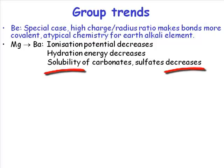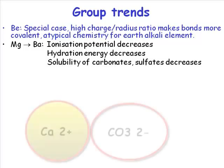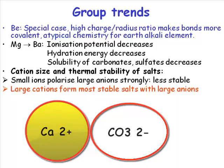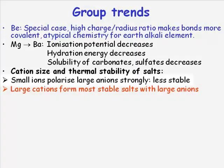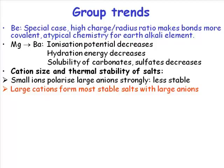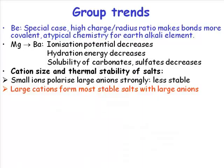Because hydration energy is decreasing — the energy you get back when you dissolve something is decreasing — you find that the solubility of these species also decreases. So if you have a large 2+ cation and a large 2− anion like a carbonate or a sulfate, that's a recipe for a really very poorly soluble material. Small ions like Be²⁺ polarize large anions, giving a species that is not very stable. One of the general points when predicting the stability of an ionic lattice is that you need a match between the size of the anions and the cations — the most stable lattices are those where anions and cations are matched fairly closely in size.